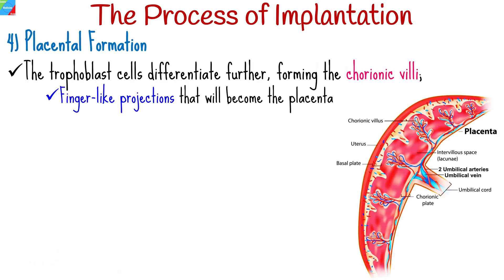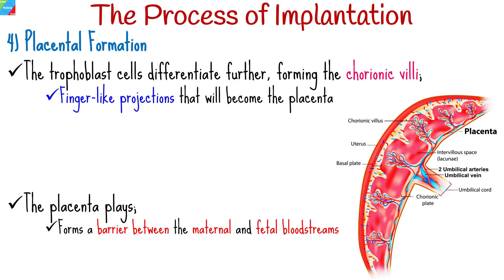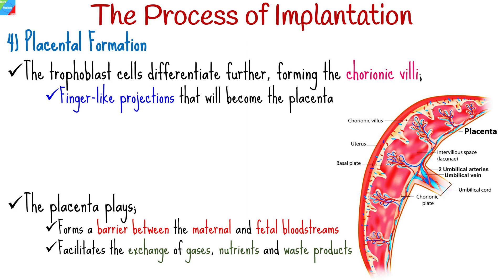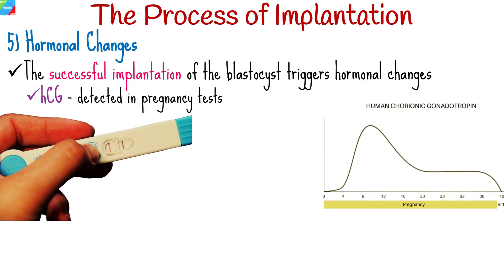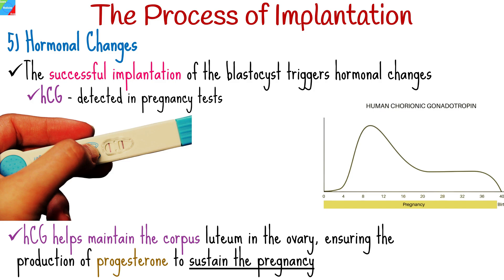The trophoblast cells eventually differentiate further, forming the chorionic villi, finger-like projections that will become the placenta. The placenta plays a crucial role in providing a barrier between the maternal and fetal bloodstreams while facilitating the exchange of gases, nutrients, and waste products. The successful implantation of the blastocyst triggers hormonal changes, including the production of human chorionic gonadotropin, which is detected in pregnancy tests. This hormone helps maintain the corpus luteum in the ovary, ensuring the production of progesterone to sustain the pregnancy.